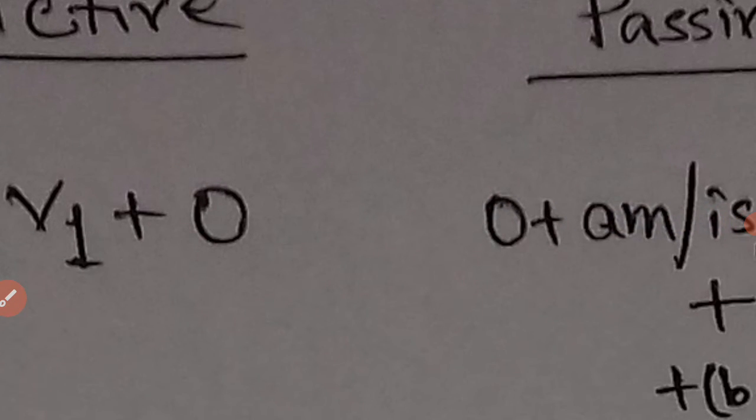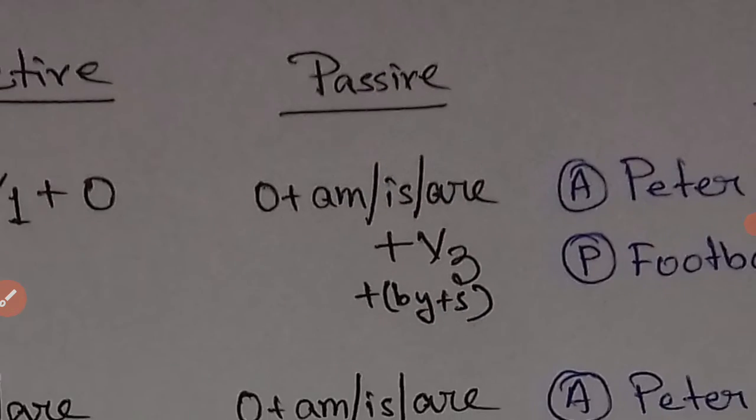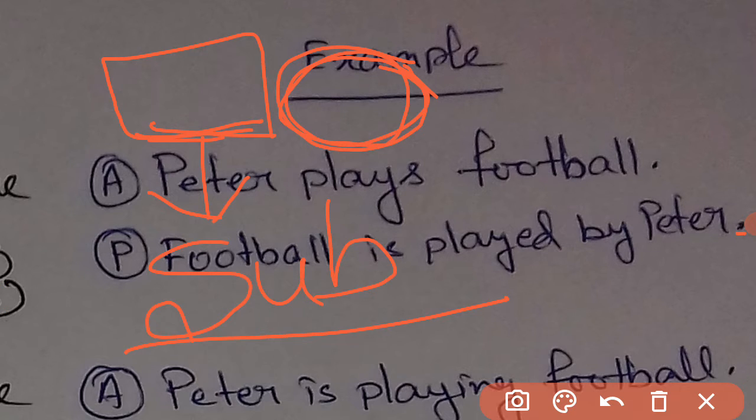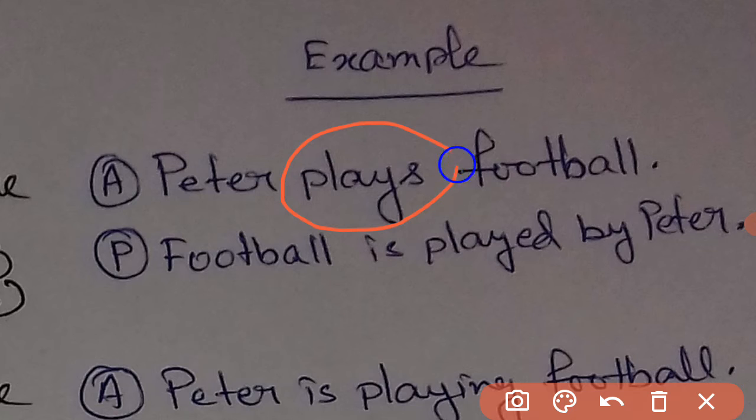After subject V1 comes the object, which I already mentioned in the previous video how to find it out. Once you find out what is subject, verb, and object in a sentence—for instance, in this case, 'plays' is my verb. Plays is V1. Peter is my subject and football is my object.